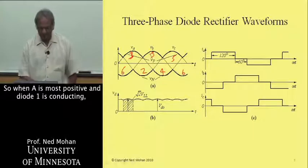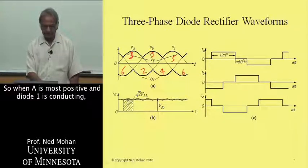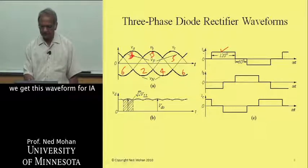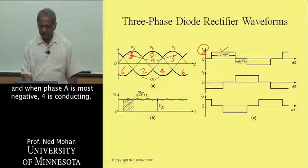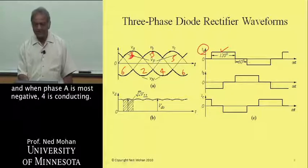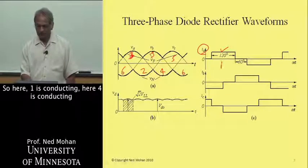When A is most positive and diode one is conducting, we get this waveform for IA. And when phase A is most negative, four is conducting. Here one is conducting, here four is conducting.